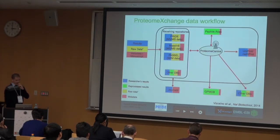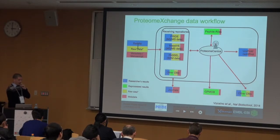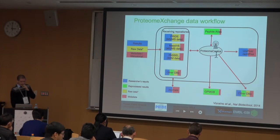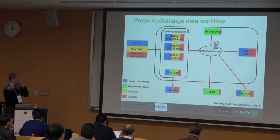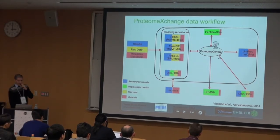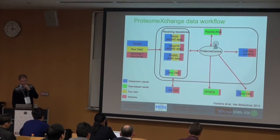The main workflow is that researchers can submit their results data, their raw data, and some metadata related to the publication to all of these partner databases. Then one central point highlights that a dataset was submitted and published. It is also a way to allow data flow to other databases like PeptideAtlas, GEO, EMDB, UniProt, and NextProt.